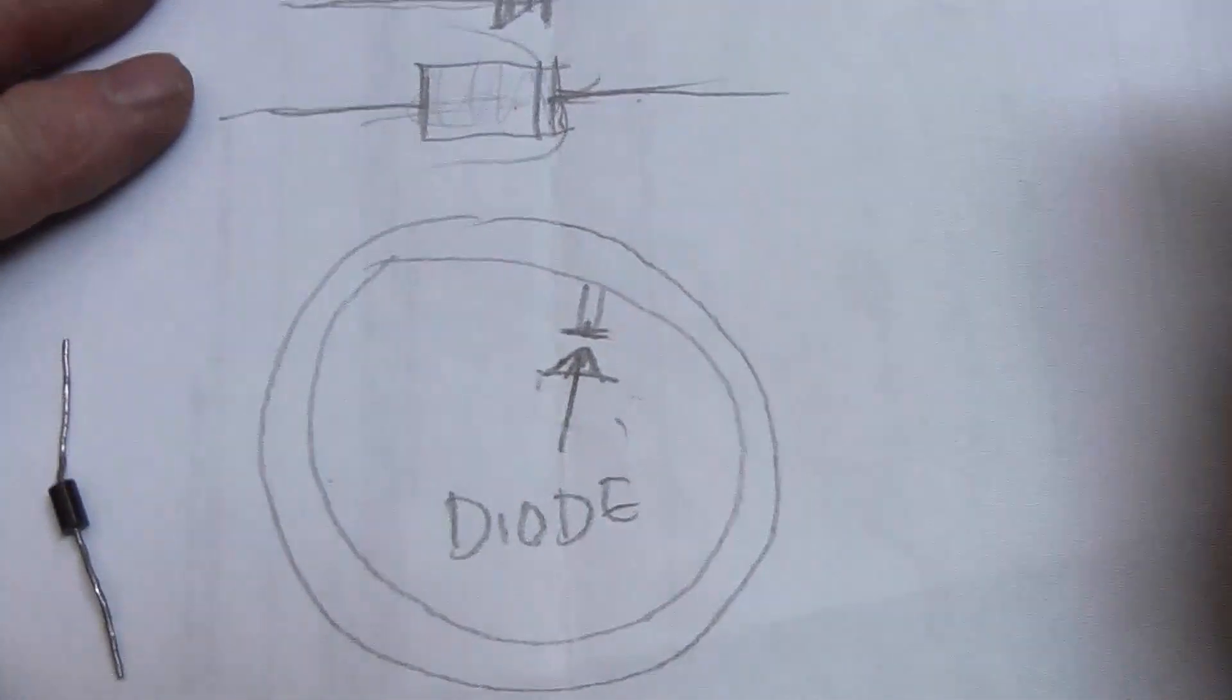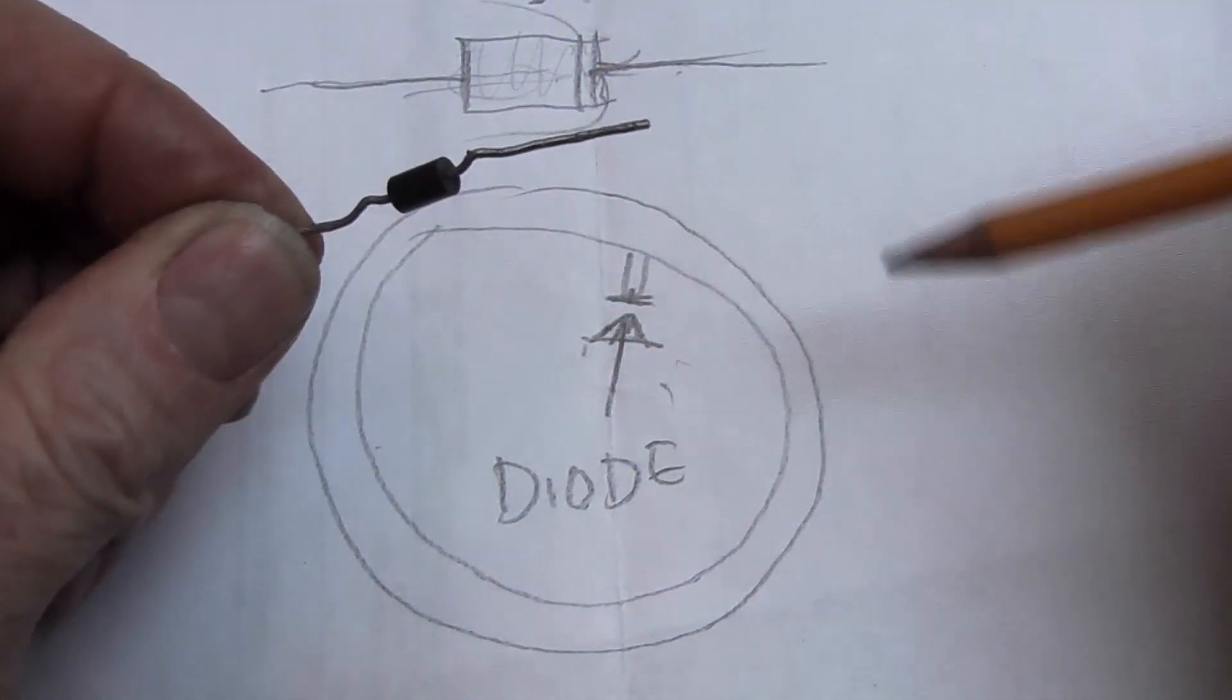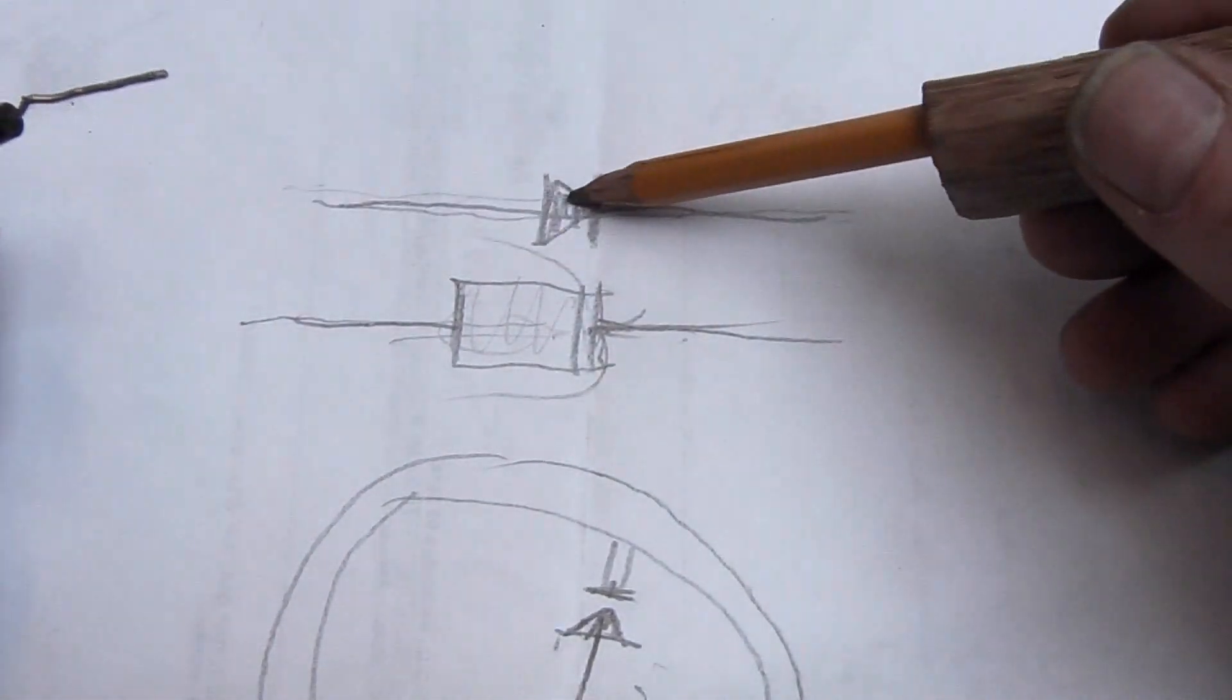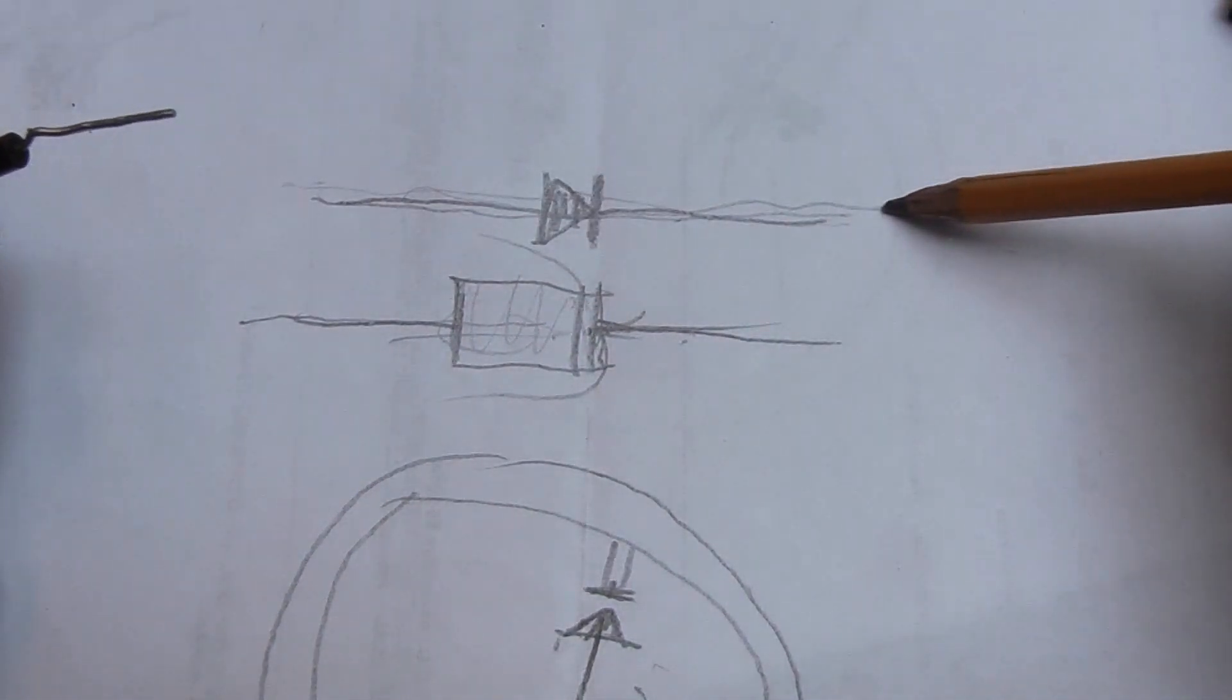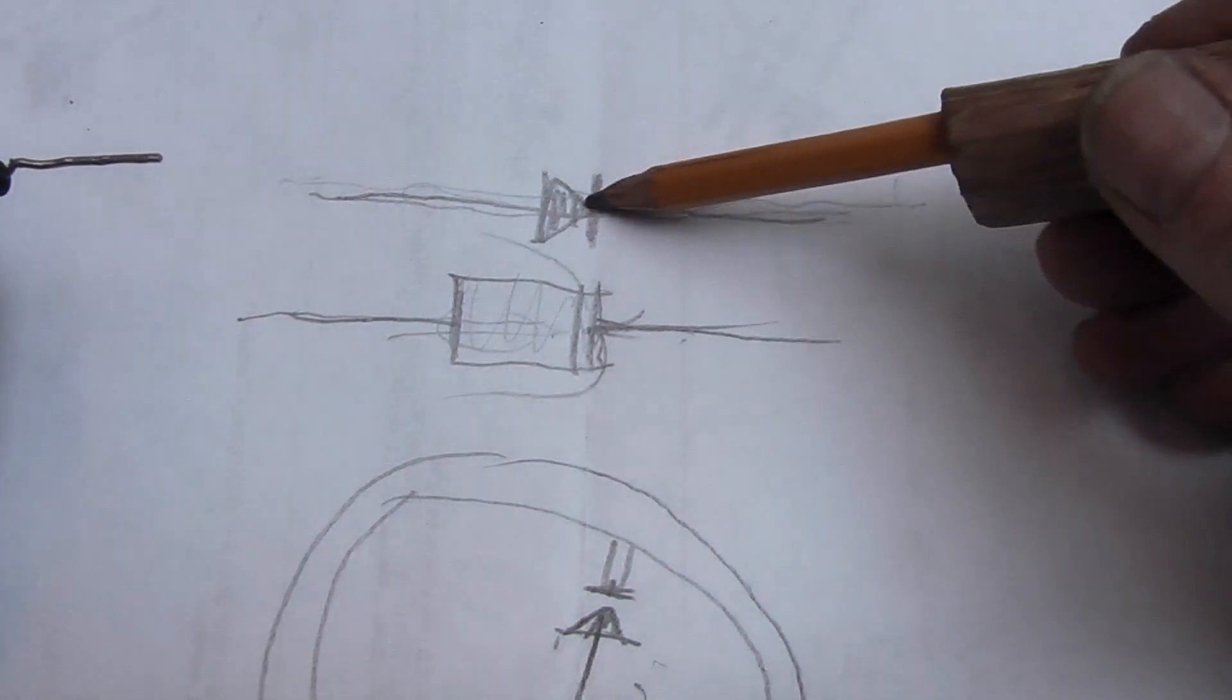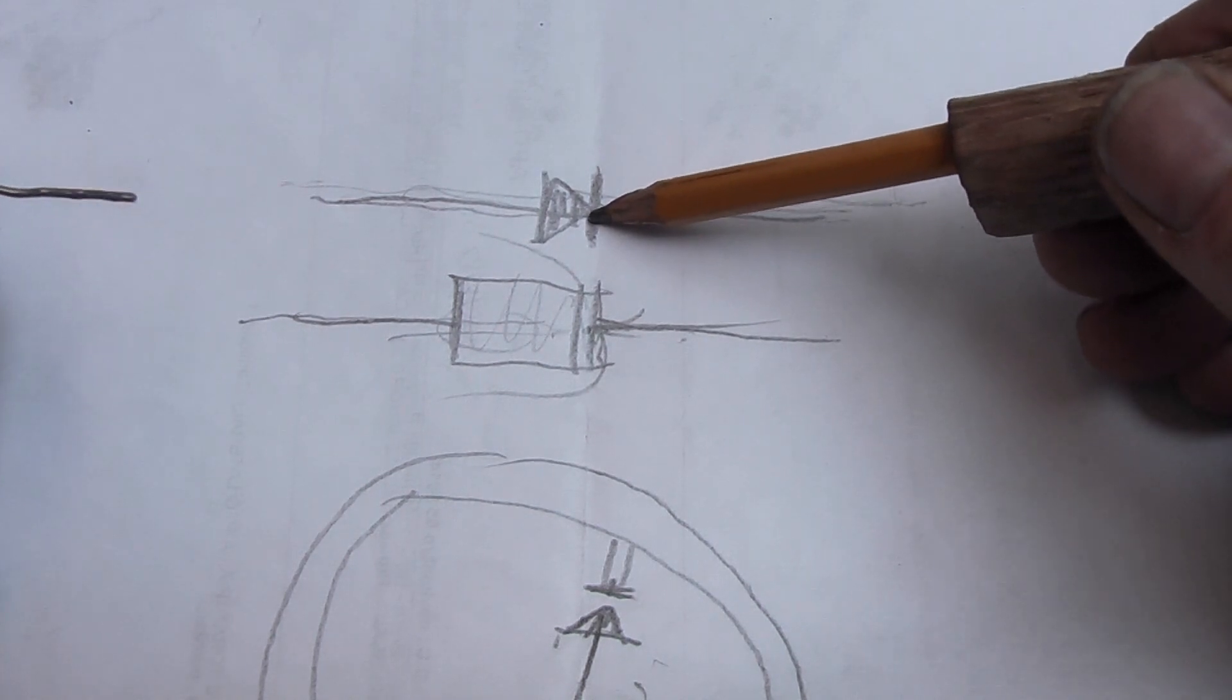So basically, the electrical equivalent of a valve is the diode, and we are going to use that so that when the electricity comes from the generator, when it is generating it will go one way, charge up the battery, and when I stop cranking the handle it hits our valve, won't flow back, and won't turn the motor back into a motor.